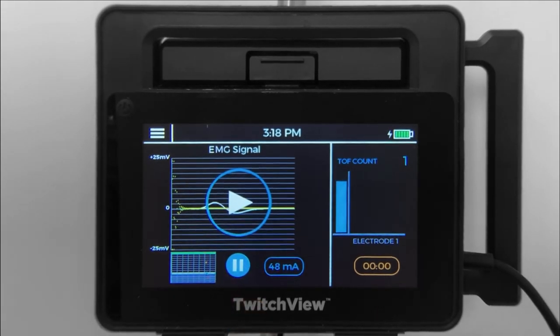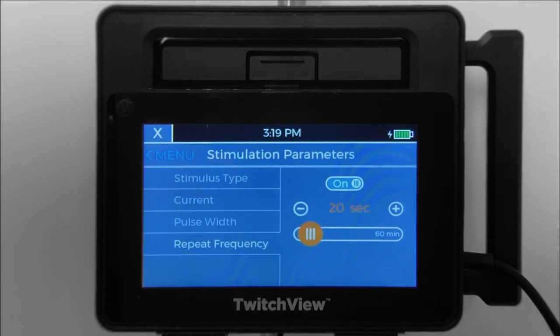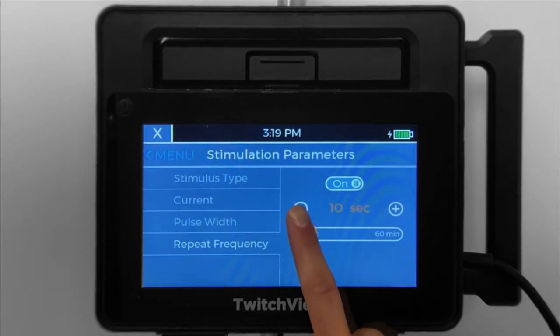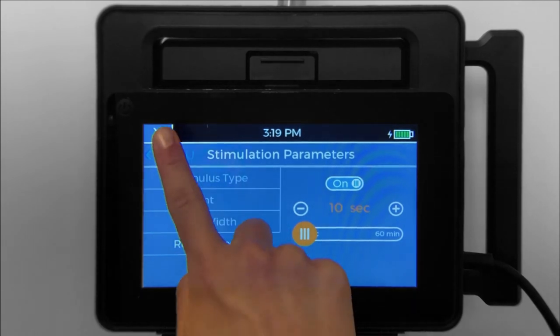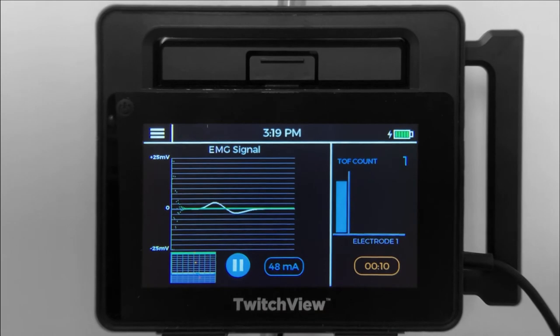A STAT measurement can be taken by pressing pause and then play. To change the measurement interval, touch the countdown timer and toggle to the desired time. Press play to resume monitoring.